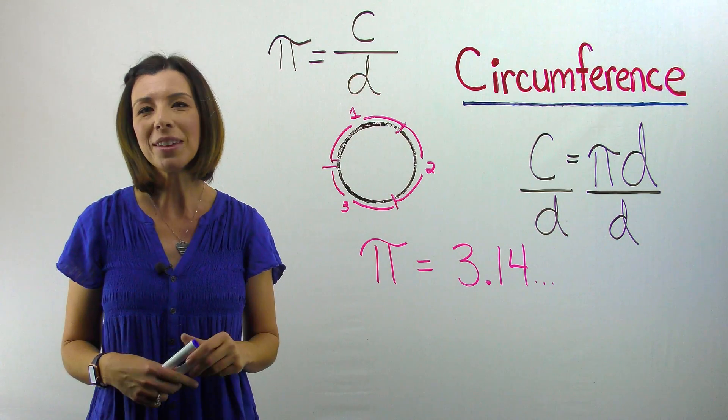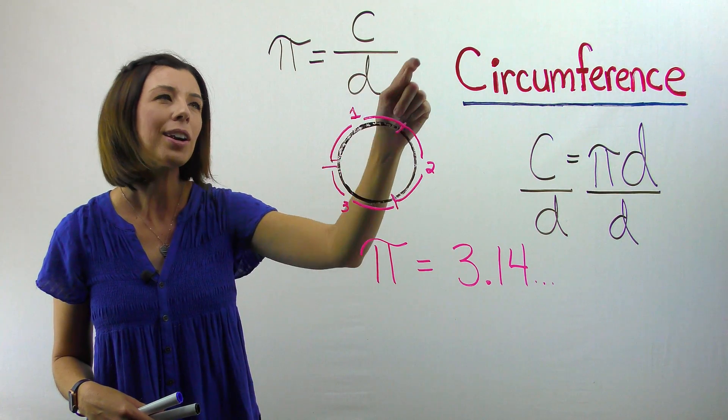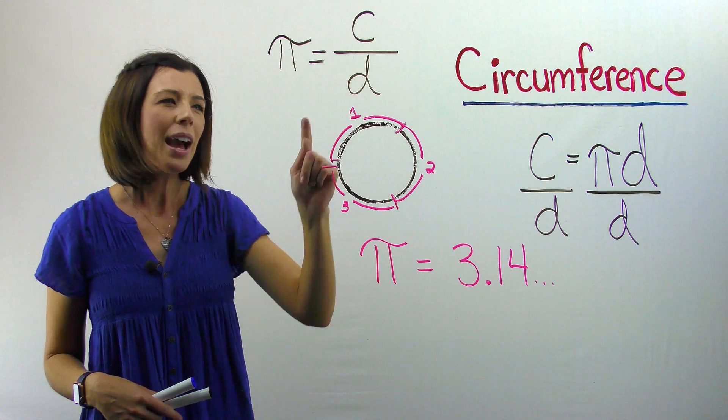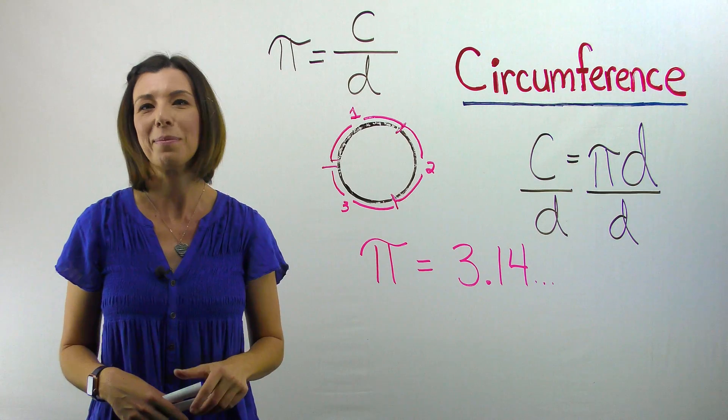Again, if I'm thinking about division from a conceptual standpoint, I'm thinking about how many copies of the diameter are in the circumference? Are you seeing where I'm going here? So how many copies of the diameter are in the circumference? Three and a little bit more.